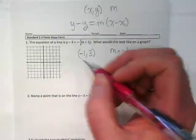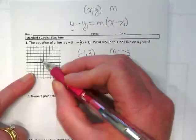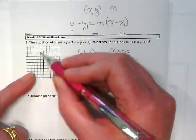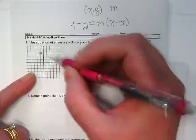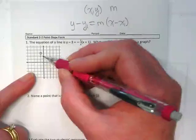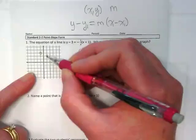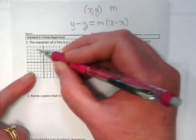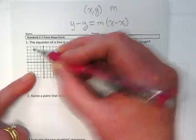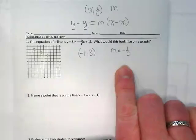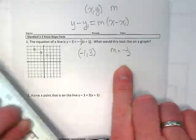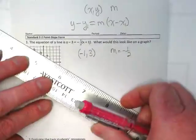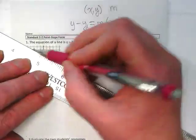So the first thing I do is plot the point, negative 1, positive 3. And I find a second point using my slope. Drop down 1 and run over 2. Or it could have gone up 1 and to the left 2. I'm going to have a negative slope, which makes sense here, because we saw we have a negative sign in front of the slope.